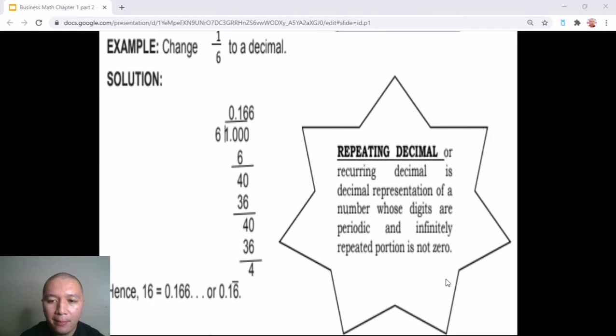Here is another example of a fraction which has an answer of a repeated decimal. So if we would divide 1 by 6, our answer will be 0.16666 up to infinity. So in order for us to round it off, we would just round it off to 2 decimal points, 0.16 and then place a vinculum at the top of our decimal area.